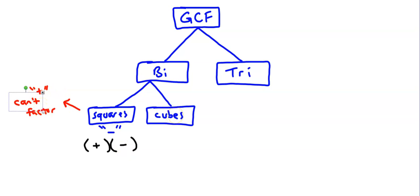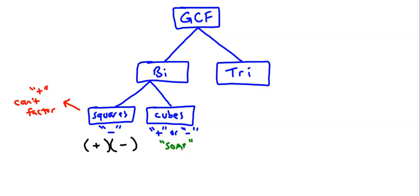If it's perfect cubes, you can factor it whether it's plus or minus. The sign doesn't affect whether you can factor it, but it does affect the signs in the answer. This is where you use SOAP — that stands for Same, Opposite, and Always Positive. You'll have a smaller parentheses which is a binomial, and a larger parentheses which is a trinomial. Anything else that's a binomial beyond squares and cubes we haven't covered.